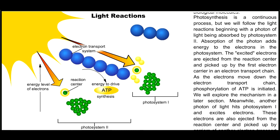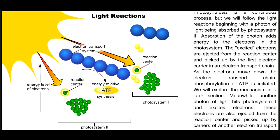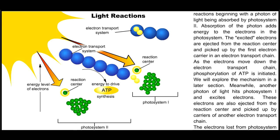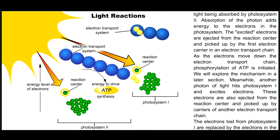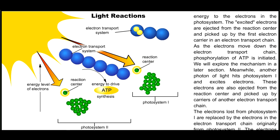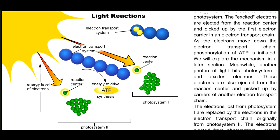These electrons are also ejected from the reaction center and picked up by carriers of another electron transport chain. The electrons lost from photosystem I are replaced by the electrons in the electron transport chain originally from photosystem II.